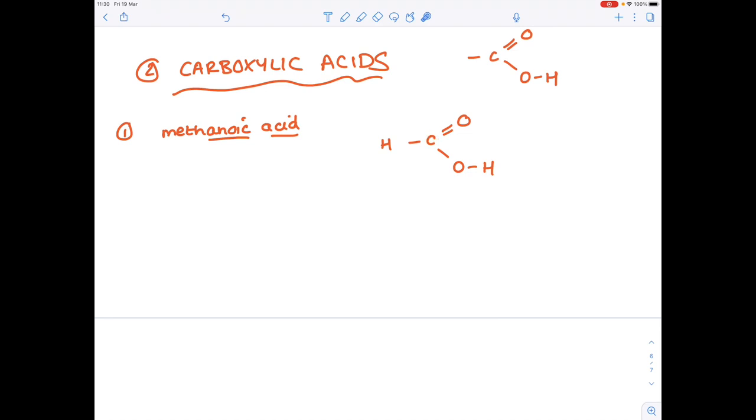And just double check your number of bonds. Carbon needs to have four bonds. One, two, three, four. Oxygen has two. One, two. One, two. Hydrogen has one. Perfect. So that's the first carboxylic acid.